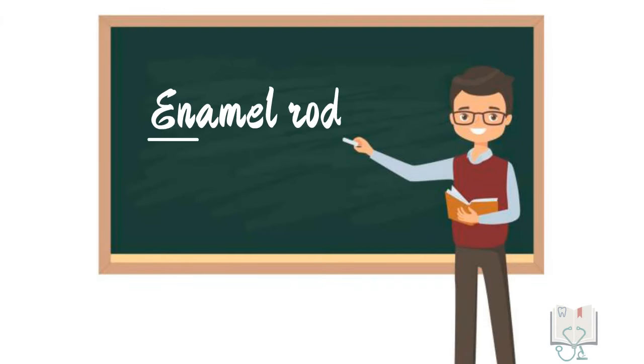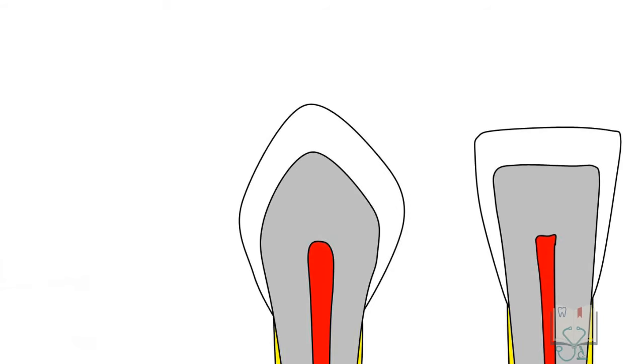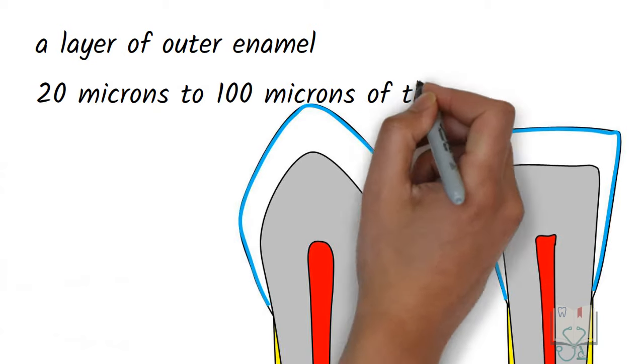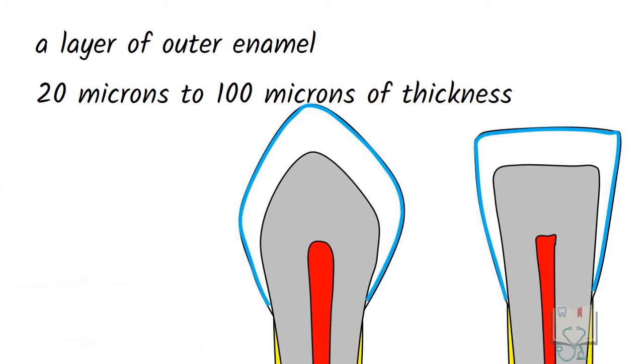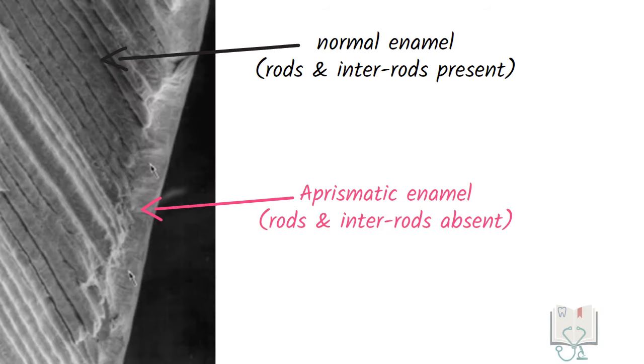That was about enamel rods. But there is something known as aprismatic enamel. Aprismatic enamel is a layer of outer enamel 20 microns to 100 microns of thickness. It is called so because no enamel rods can be seen in it. It is more mineralized than the rest of the enamel.